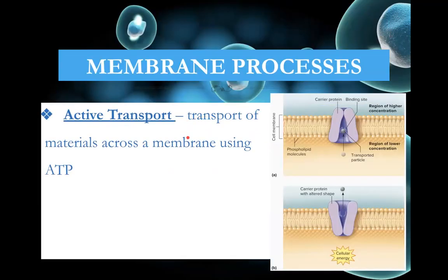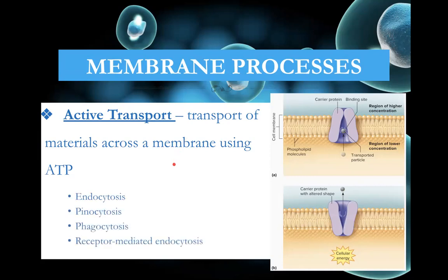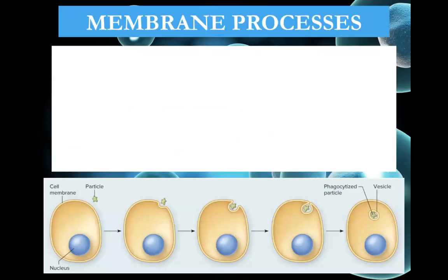Active transport is where energy needs to be used to transport something from one side to the other. That includes endocytosis, pinocytosis, phagocytosis, and receptor-mediated endocytosis, as well as exocytosis.